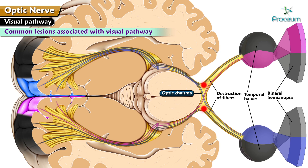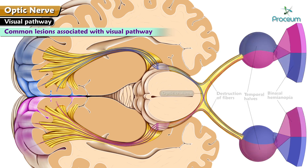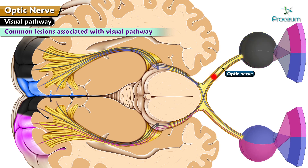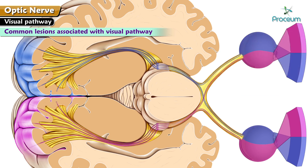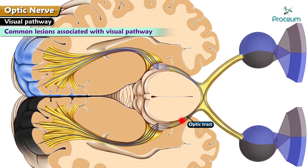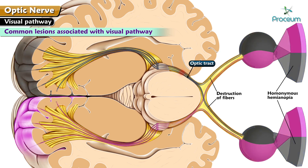Destruction of one optic nerve causes blindness of the affected eye; a common example is retrobulbar neuritis. Lesions in the optic tract result in homonymous hemianopia, which means loss of both the right halves or both the left halves of the visual field.